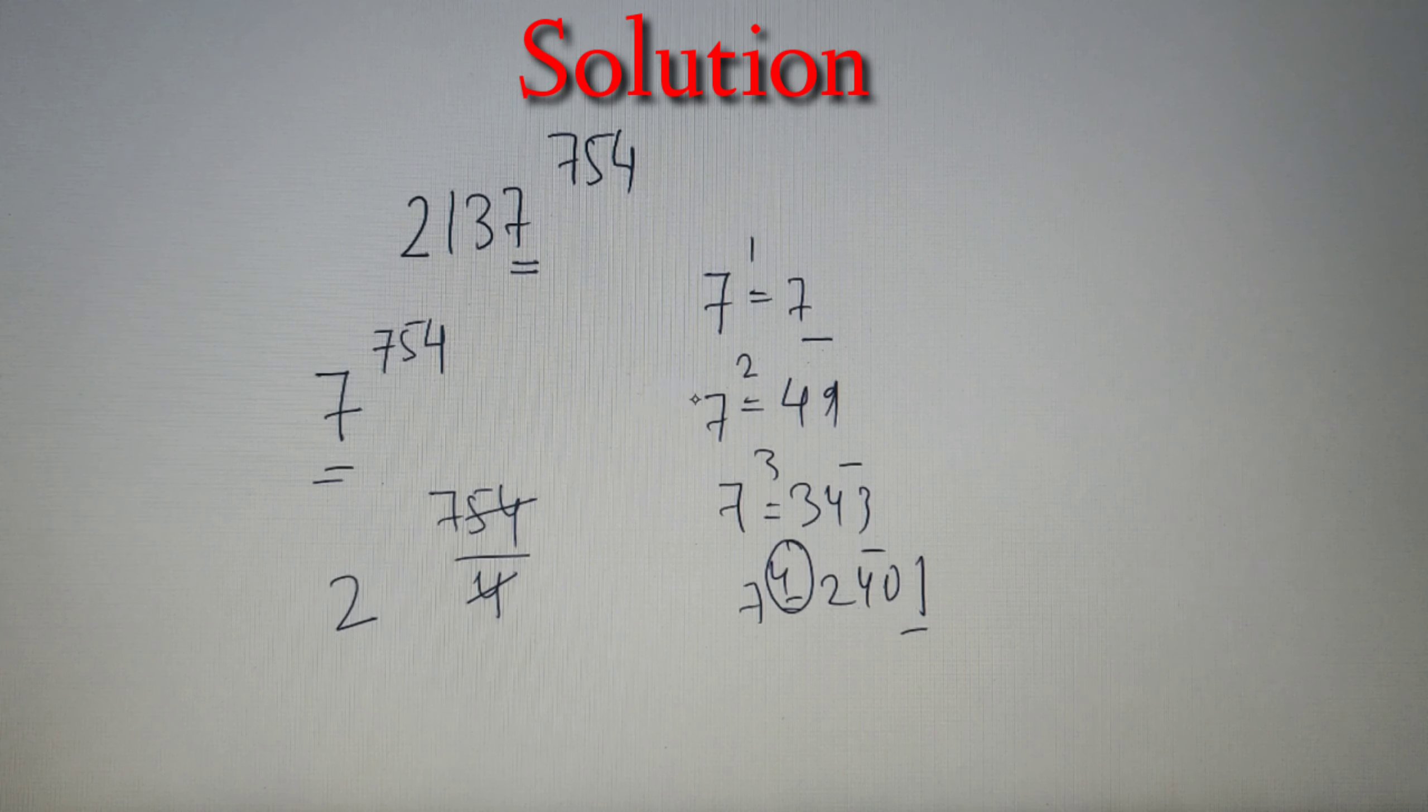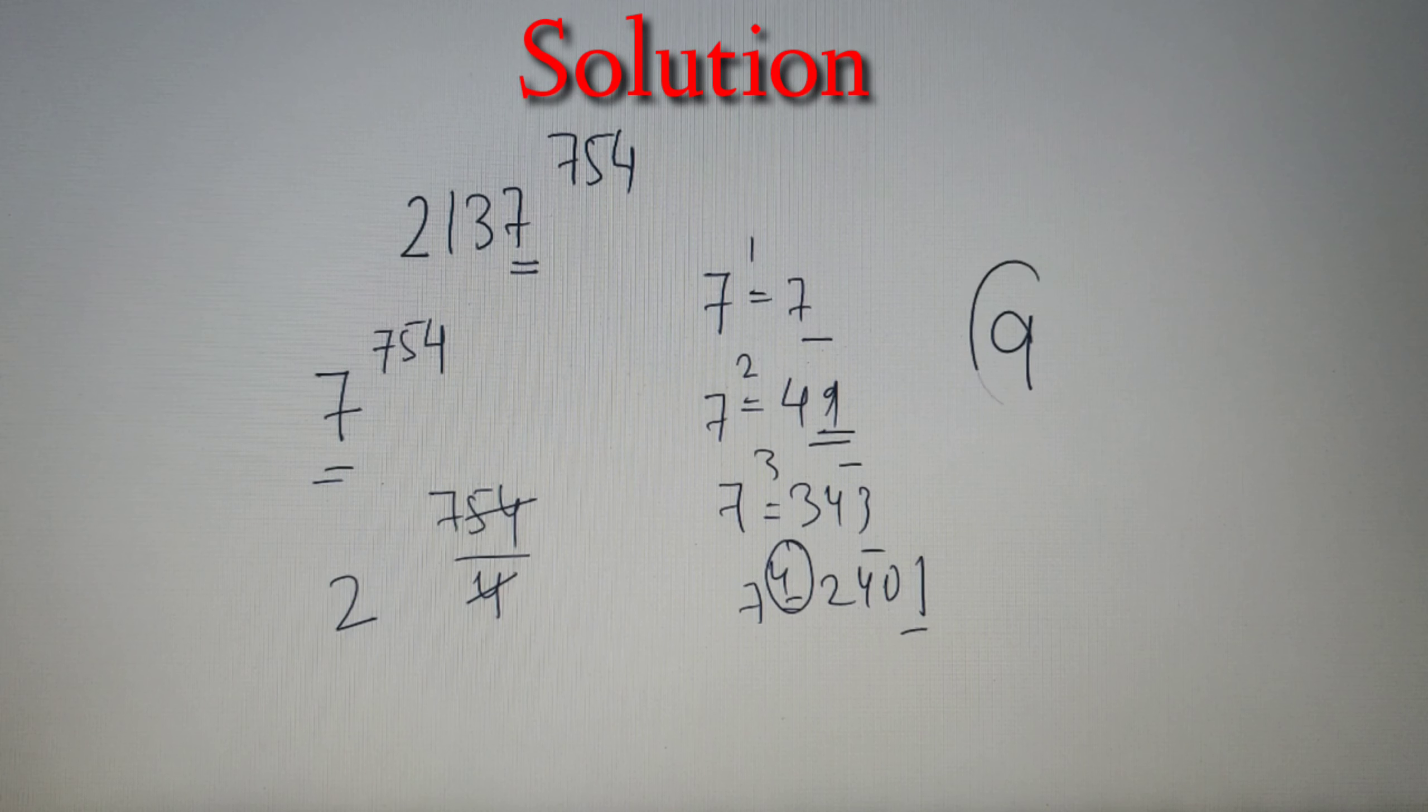So since the remainder is 2 our answer will be the unit digit of 7 raised to the power 2 which is equal to 9. So our final answer is equal to 9.